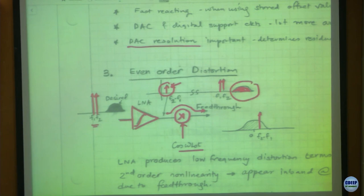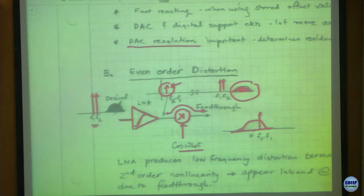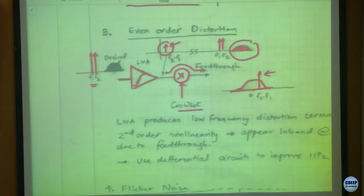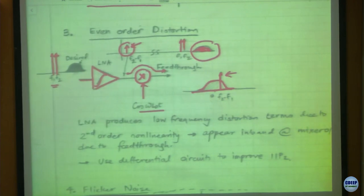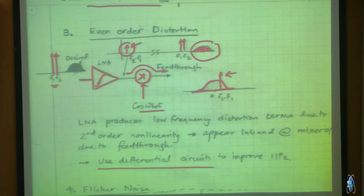On top of that you see your down-converted desired signal, so you have corrupted it. The LNA's second-order component at low frequency couples directly to the mixer output and lands in the desired portion of the band. This is the even-order distortion from the LNA - a problem with the 0IF technique. The fix is simple: use differential circuits to improve IIP2, and this problem gets alleviated.